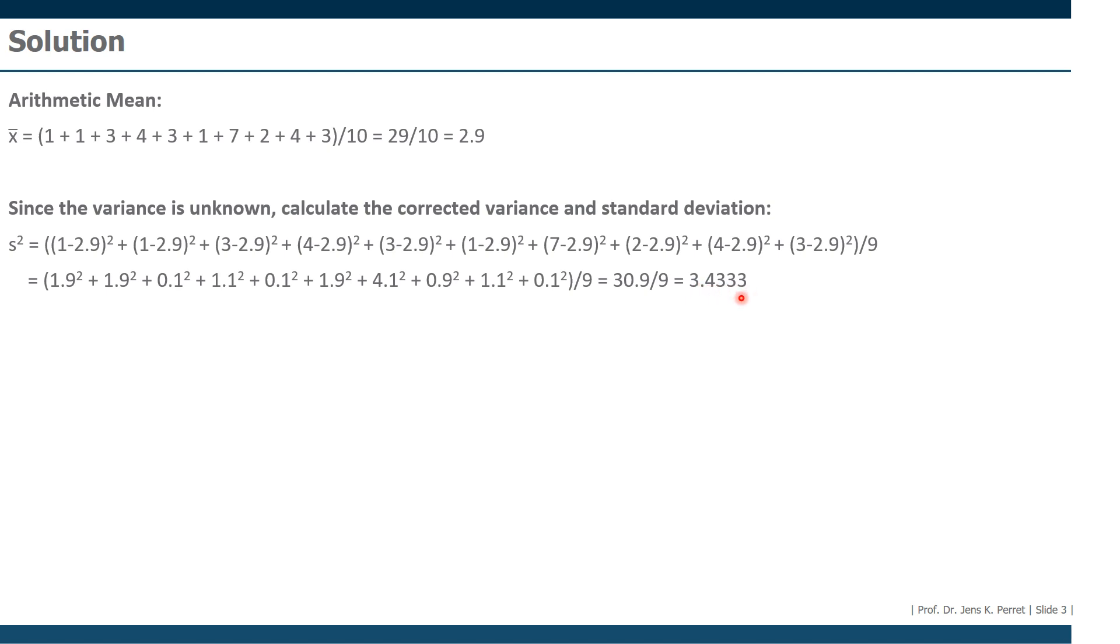However, that's the corrected variance. We're looking for the corrected standard deviation which we need in our test. To get this we simply take the square root of the variance, giving us a standard deviation of 1.8529.